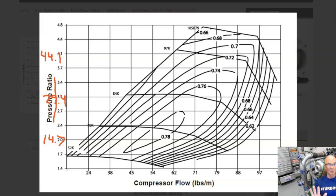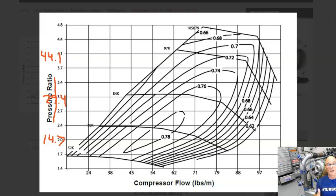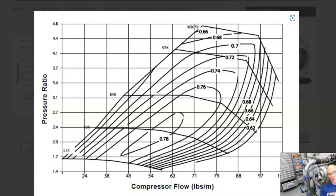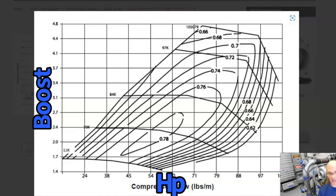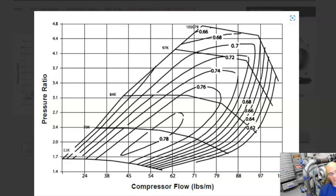So that's how we understand the compressor maps. One side is boost, the other side is airflow. Now all we have to do is figure out on our combination where the intersection is for both of these, and we can figure out what turbo we should pick. We've got compressor flow in pounds per minute — multiply those numbers by 10 and we have horsepower. On the other side is pressure ratio, which I showed you how to convert to boost. Now let's take a look at the numbers that are in the middle.